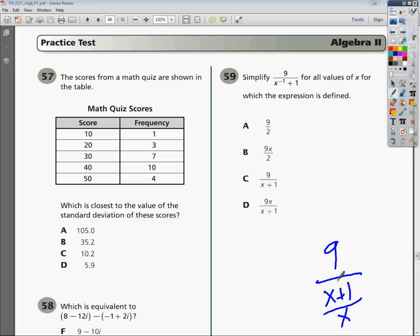And I'm going to use what I learned like in the 6th grade, which was keep it, flip it, switch it. The keep part would be I would keep the 9. And if I wanted to, I could make a 9 over 1. It doesn't really matter. Then I'm going to flip the x plus 1 over x, so it becomes x over x plus 1. And then I'm going to switch the sign from divide to multiply.